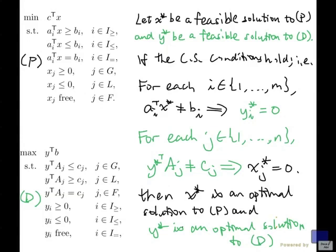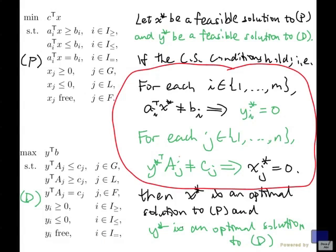So the complementary slackness conditions give a characterization of optimality for a primal dual pair. So let's recall, if you have optimal solutions x star and y star, they must satisfy the complementary slackness conditions. And if you have feasible solutions x star and y star satisfying these complementary slackness conditions, then we can conclude that they are both optimal for their respective problems.